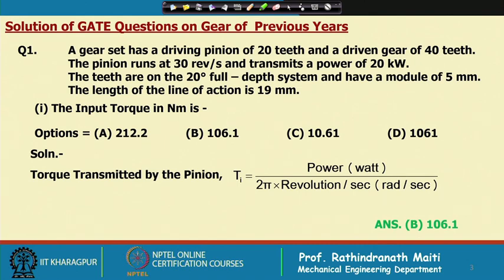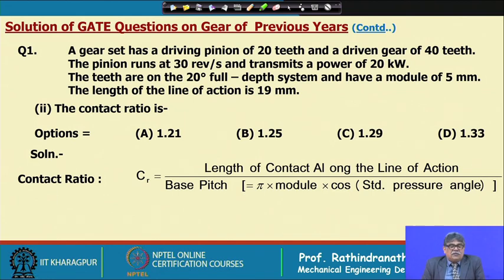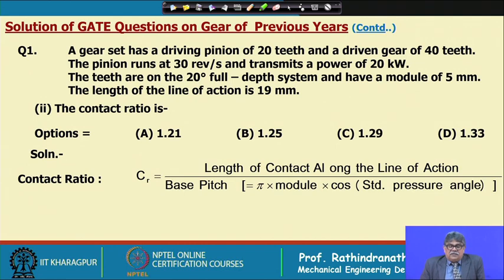The next question asks for the contact ratio. The contact ratio is the length of contact along the line of action divided by the base pitch of the gear, which equals π times module times cosine of the standard pressure angle.